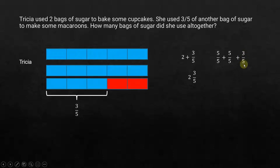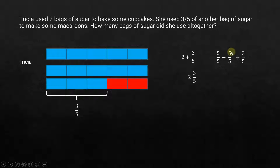So we have 1 plus 1 plus 3 over 5. Since the denominators are the same, we can add the numerators directly: 5 plus 5 is 10, plus 3 is 13. So we get 13 over 5.